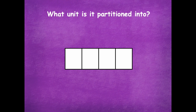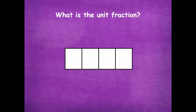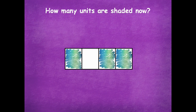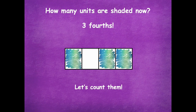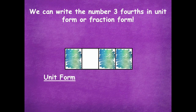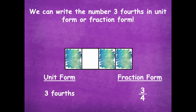The rectangle is a whole. What unit is it partitioned into? Fourths. What's the unit fraction? One-fourth. I've shaded in some more, so now how many units are shaded? Three-fourths. Let's count them together: one-fourth, two-fourths, three-fourths. We can write them in unit form — using words — and in fraction form numerically. There are three parts that are shaded, and the total number of parts is four.